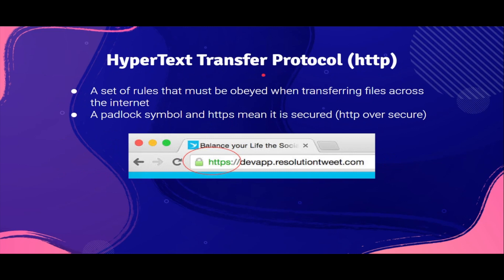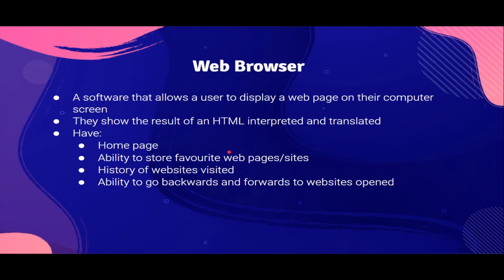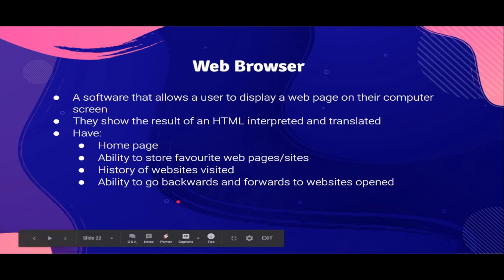Next, hypertext transfer protocol, or HTTP. These are a set of rules that must be obeyed when transferring files across the internet. This is represented by a padlock symbol, as you can see here. Or HTTPS — the S means that the connection is secure. Next, web browser. A web browser is basically a software that allows a user to display a web page on their computer screen. They show the result of HTML interpreted and translated. They usually have some main features: a home page, the ability to store web pages or sites — which is basically bookmarking them — history of the websites visited, and ability to go backwards and forwards through websites opened.